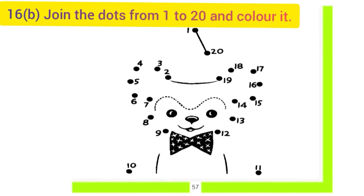Let us do the next sum. 16B. Join the dots from 1 to 20 and color it. What is this? Do you recognize this picture? No. We don't know whose picture is this.